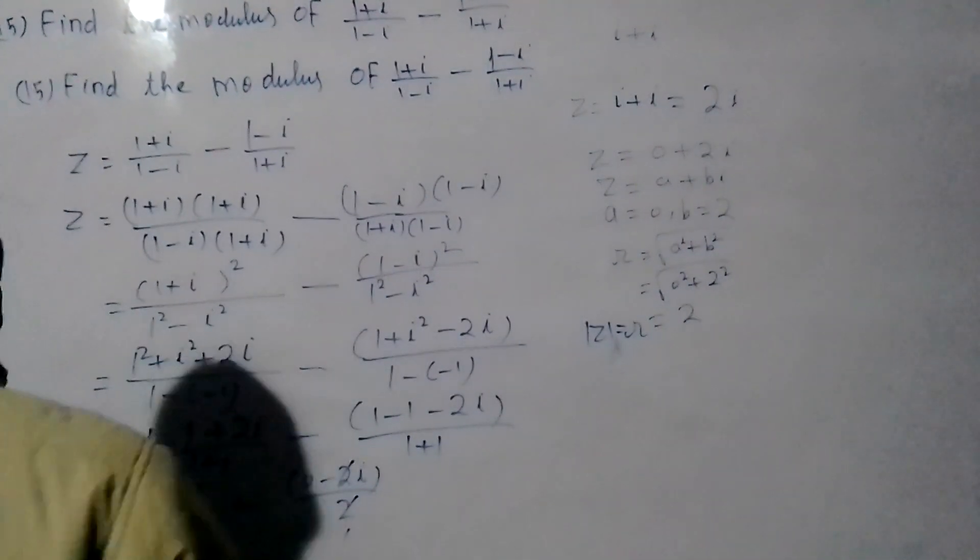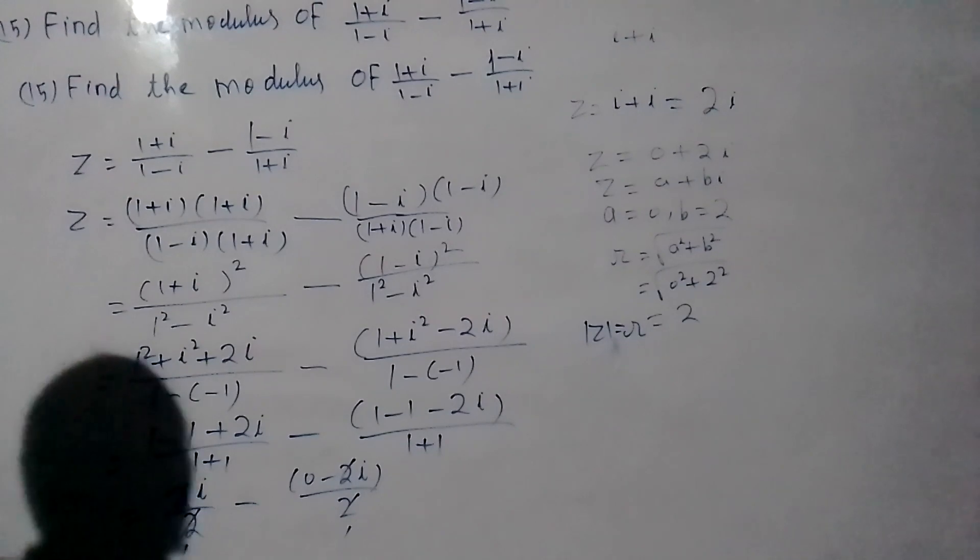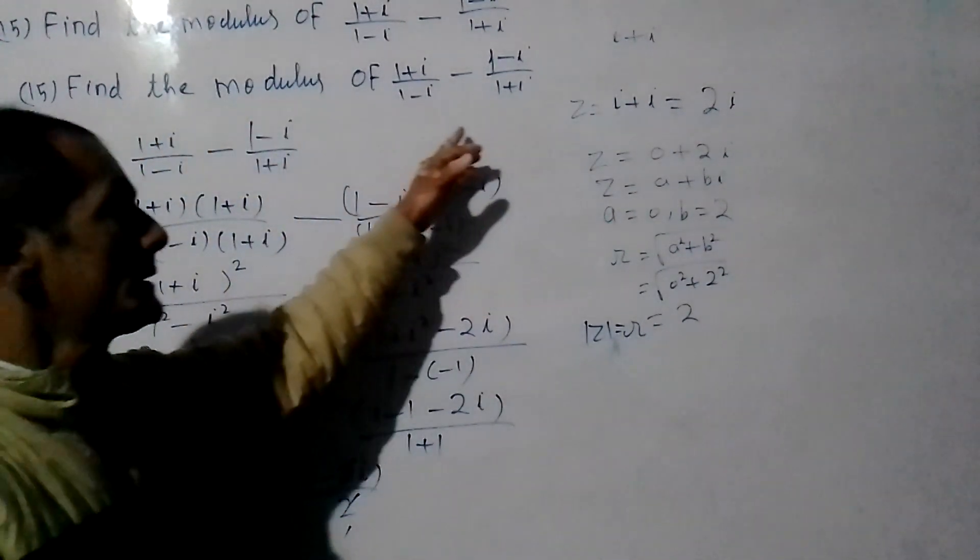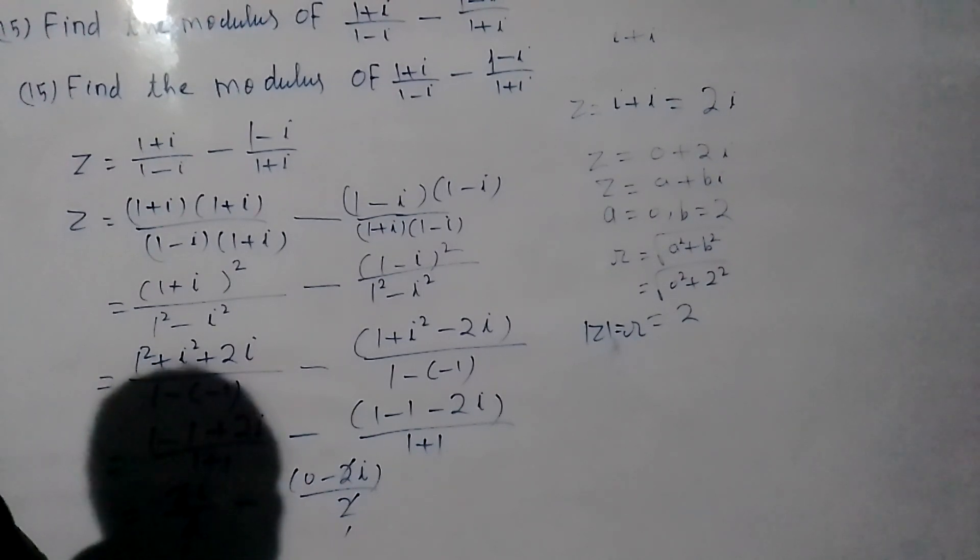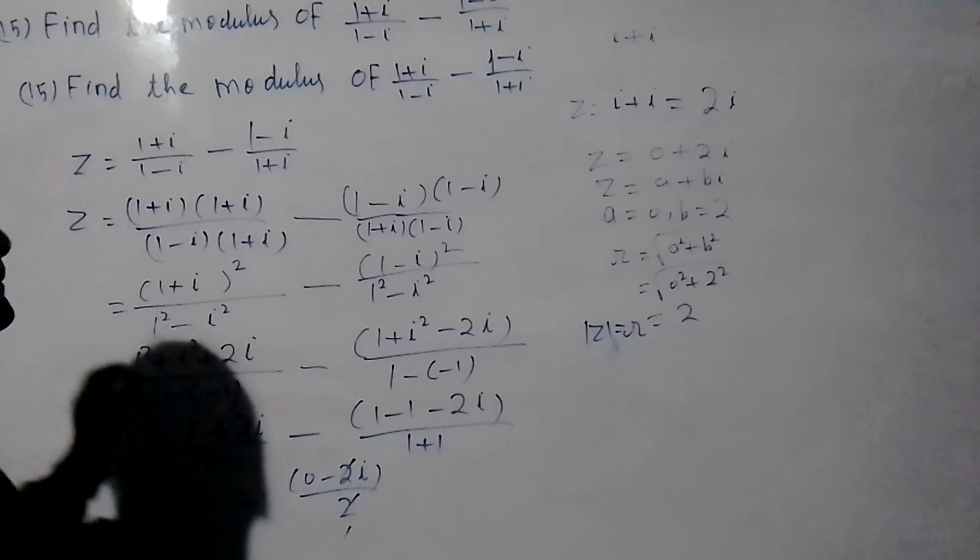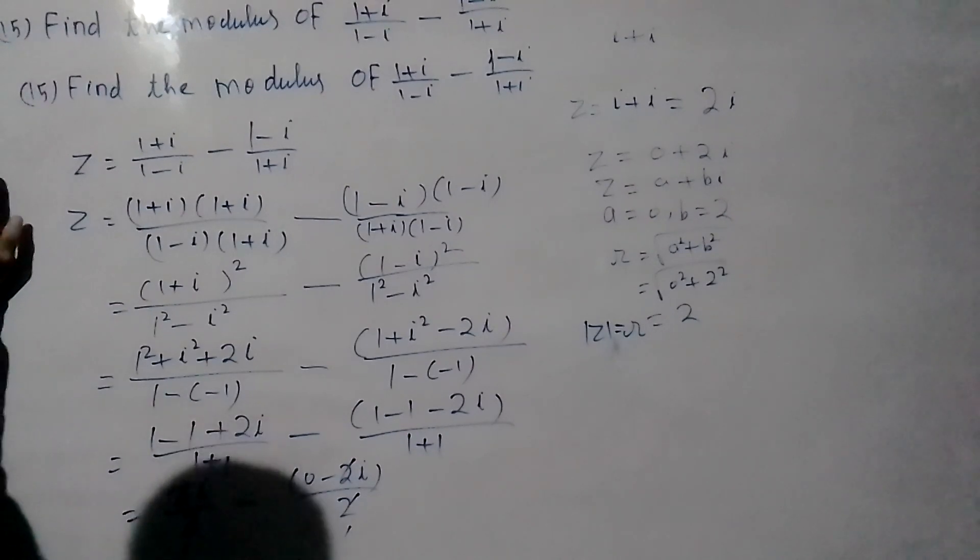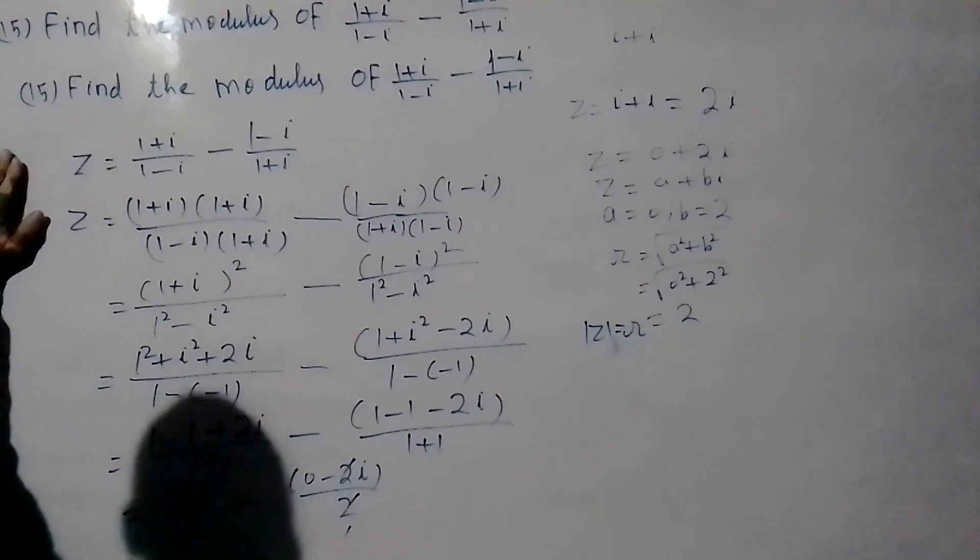To find modulus of 1 plus iota upon 1 minus iota minus 1 minus iota upon 1 plus iota, first we change this complex number into standard form A plus iota B.